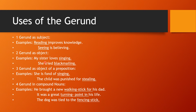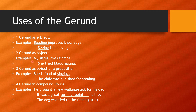Gerund as object. Examples: 'My sister loves singing.' 'She tried blackmailing.' Singing and blackmailing are gerunds ending in ing. My sister loves what? Singing. She tried what? Blackmailing. These are gerunds as object because they come after the verbs loves and tried, whereas gerund as subject comes before the verb.